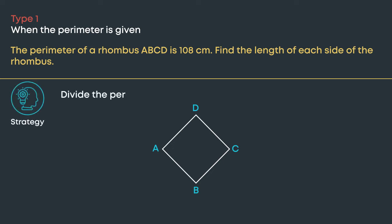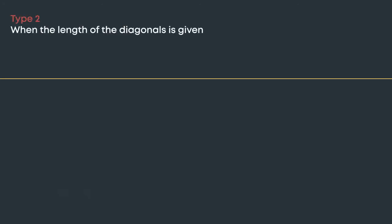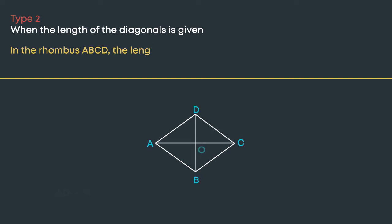So the strategy to find the length of each side is to divide the perimeter by four. Hence, in the rhombus ABCD, the length of each side is 108 divided by four, which is 27 centimeters.